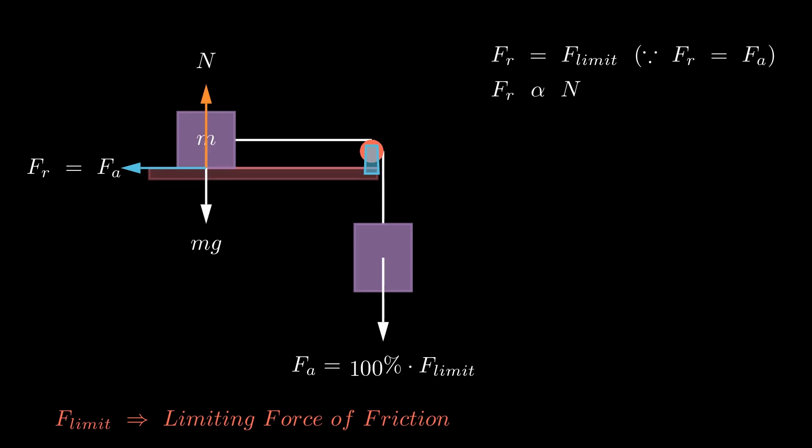The magnitude of the frictional force is directly proportional to the force exerted by the object on the surface it is in contact with, which we commonly call the normal force. The frictional force is also determined by the texture of the contact surfaces. Therefore, we can express the frictional force as shown on the screen. This specific constant is known as the coefficient of static friction, as it is applicable only when the object is at rest. The coefficient of static friction is a dimensionless constant, and its value is dependent on the texture of the surfaces in contact.